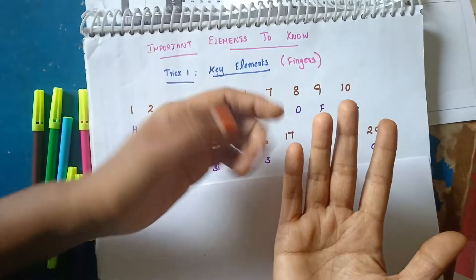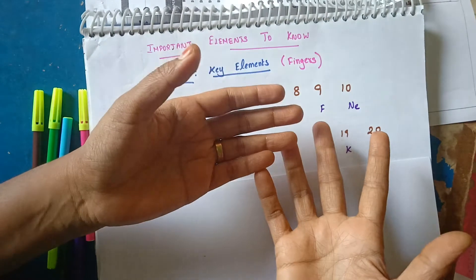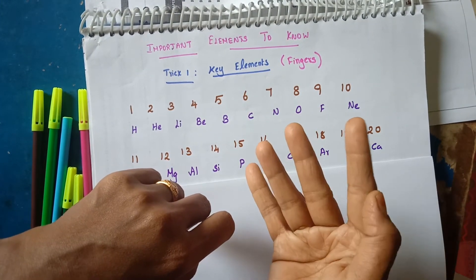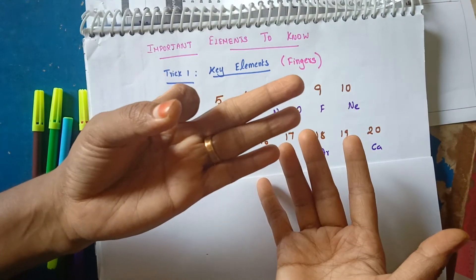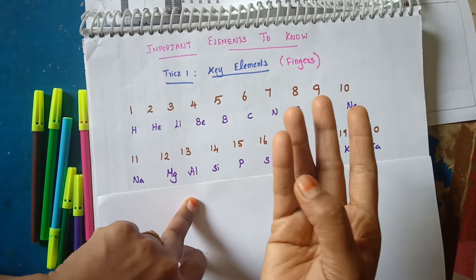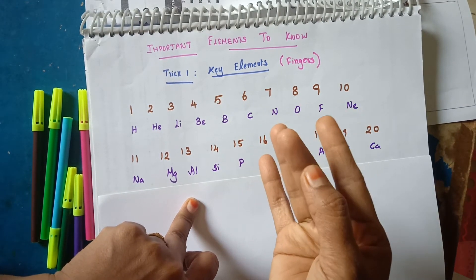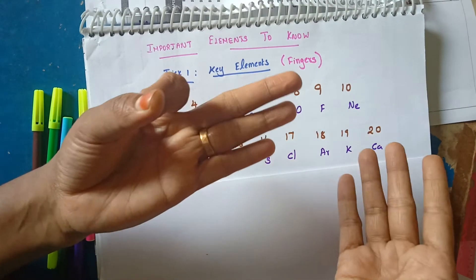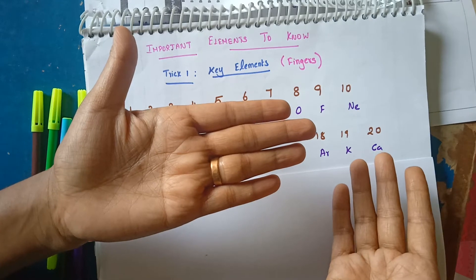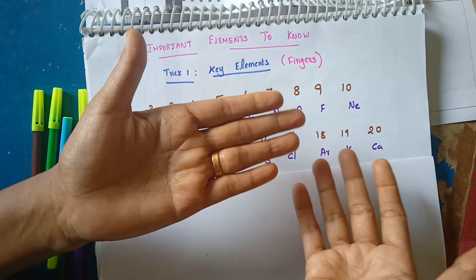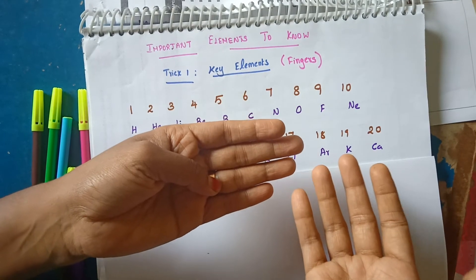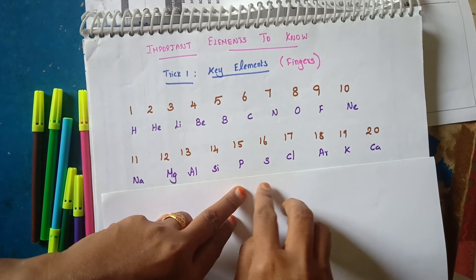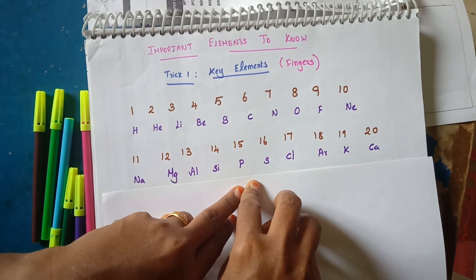So, this is the same approach. We have already done 1 to 10 elements using 10 fingers, 10 elements. Now we've done 11 to 20: Sodium, Magnesium, Aluminium, Silicon, Phosphorus, Sulfur, Chlorine, Argon, Potassium, Calcium. Press the pause button and practice 10 times. If you know 1 to 20 elements, you will know chemistry — it will be easier.